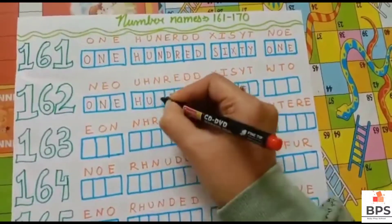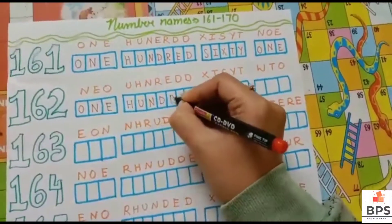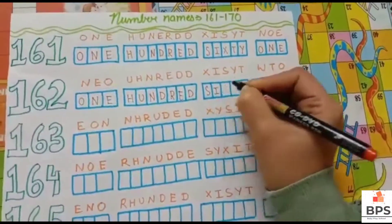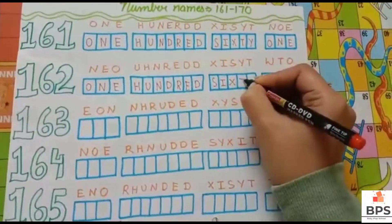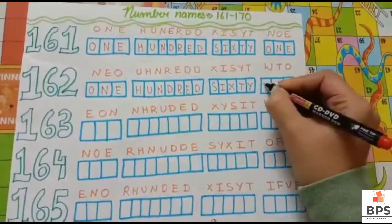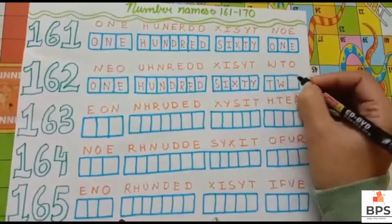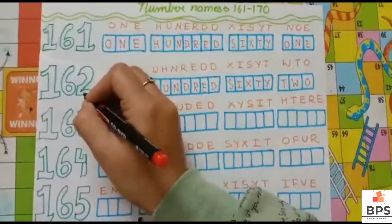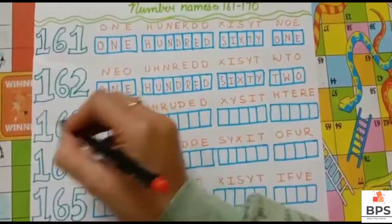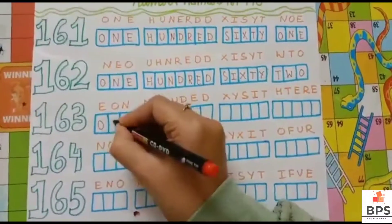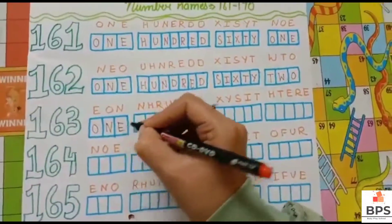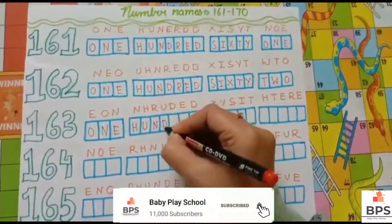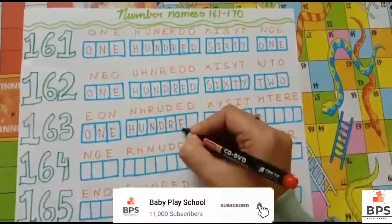One hundred sixty two. 162. O-N-E, one. H-U-N-D-R-E-D, hundred. S-I-X-T-Y, sixty. T-W-O, two. One hundred sixty two.